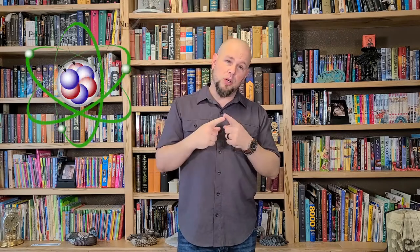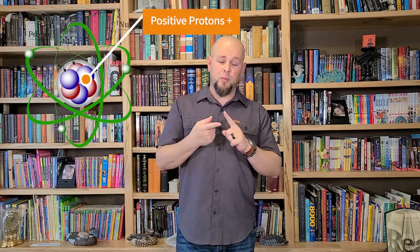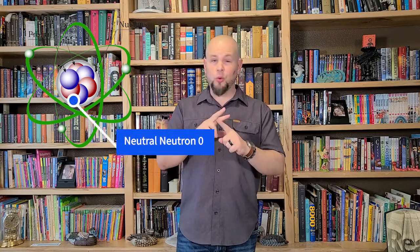Now that we understand about that building block, we're going to take it a step smaller and show you just a little bit about the parts that make up the atom. We're going to just take it one step down — if you go smaller into quarks and all those things, that's for later. But now we're going to look at the regular structure of the atom, and the atom has three parts: it has protons, which have a positive charge; neutrons, which don't have a charge; and electrons, that have a negative charge.